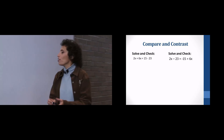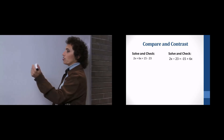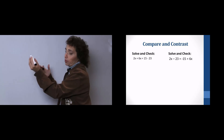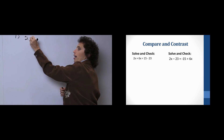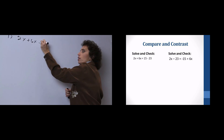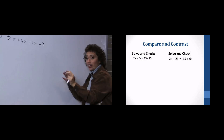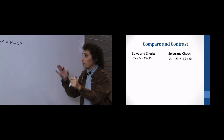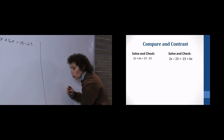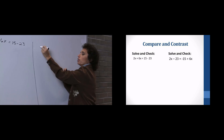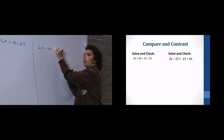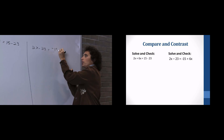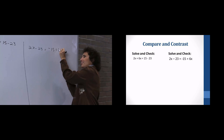Alright, let's take a look at these two equations and see how they're the same and how they're different. The first one is 2x plus 6x equals 15 minus 23. Take a really good look at that because this is going to make a big difference on how you solve them. The second is 2x minus 23 equals negative 15 plus 6x.